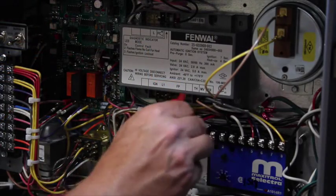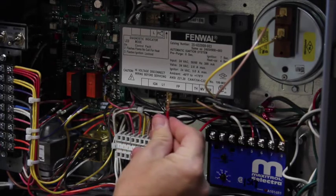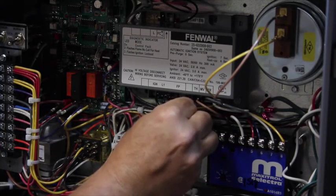Remove your microamp meter from the circuit. Be sure to reinstall the red wire on the FP terminal of the Fenwall board.